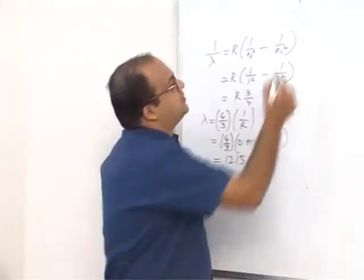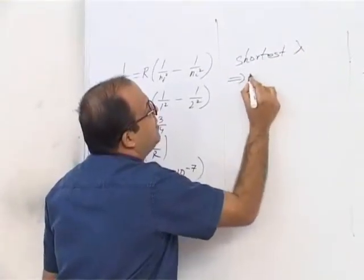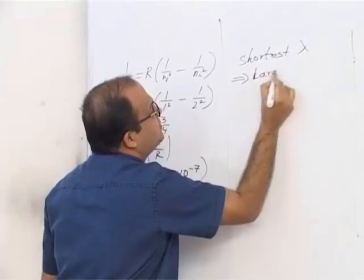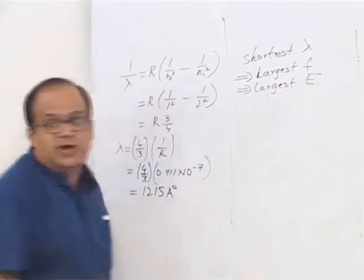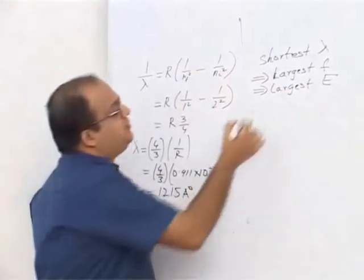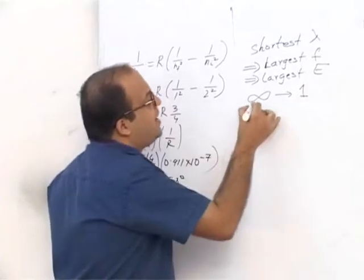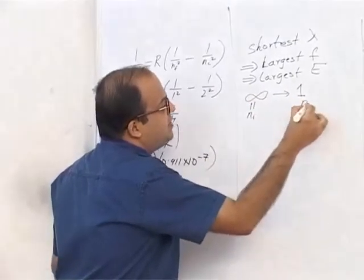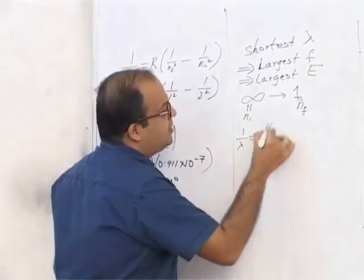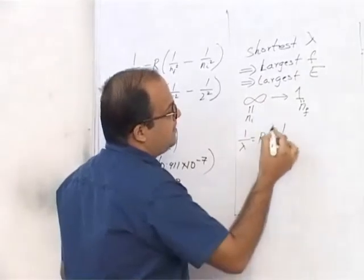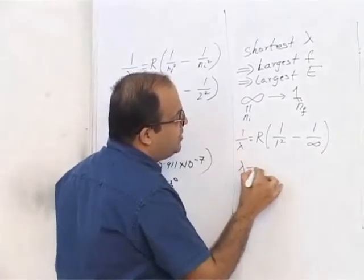For the shortest wavelength: shortest wavelength implies maximum frequency, or largest energy. For largest energy, the energy difference must be maximum, so jumping from infinity to n=1. So Ni is infinity and Nf is 1. So 1 by lambda becomes R into 1 by 1 squared minus 1 by infinity, which gives lambda equal to 1 by R, which is 0.911 into 10 to the power minus 7 meters.